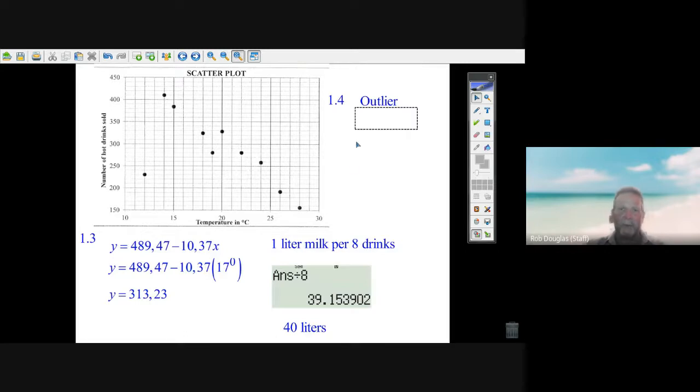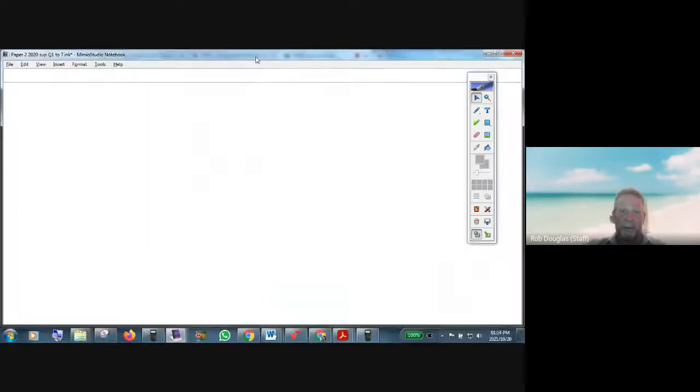Now they say of all these points of the scatter plot, which one's the outlier? Well, this guy looks kind of lonely out here. The outlier means you're kind of out of it - this point's not with all the other points. It's an outlier and it's got coordinates of 12, a temperature of 12, and 230 drinks. There's your outlier. Okay, well that's it for the first part.